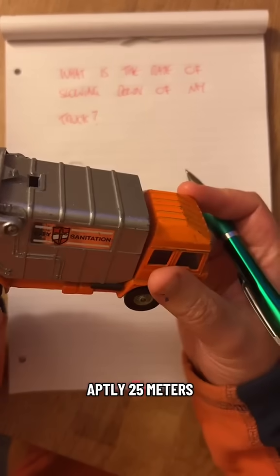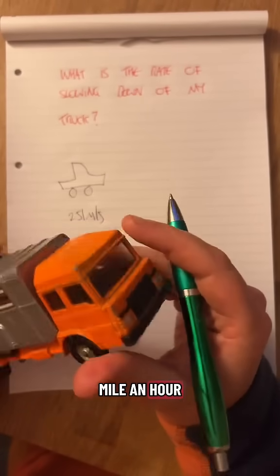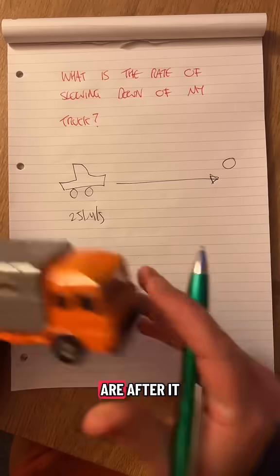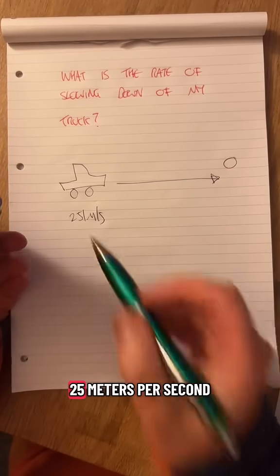Going along quite happily, 25 metres per second, about 50 miles an hour. Let's say it wants to slow down to a stop because the police are after it. There's my truck, 25 metres per second.